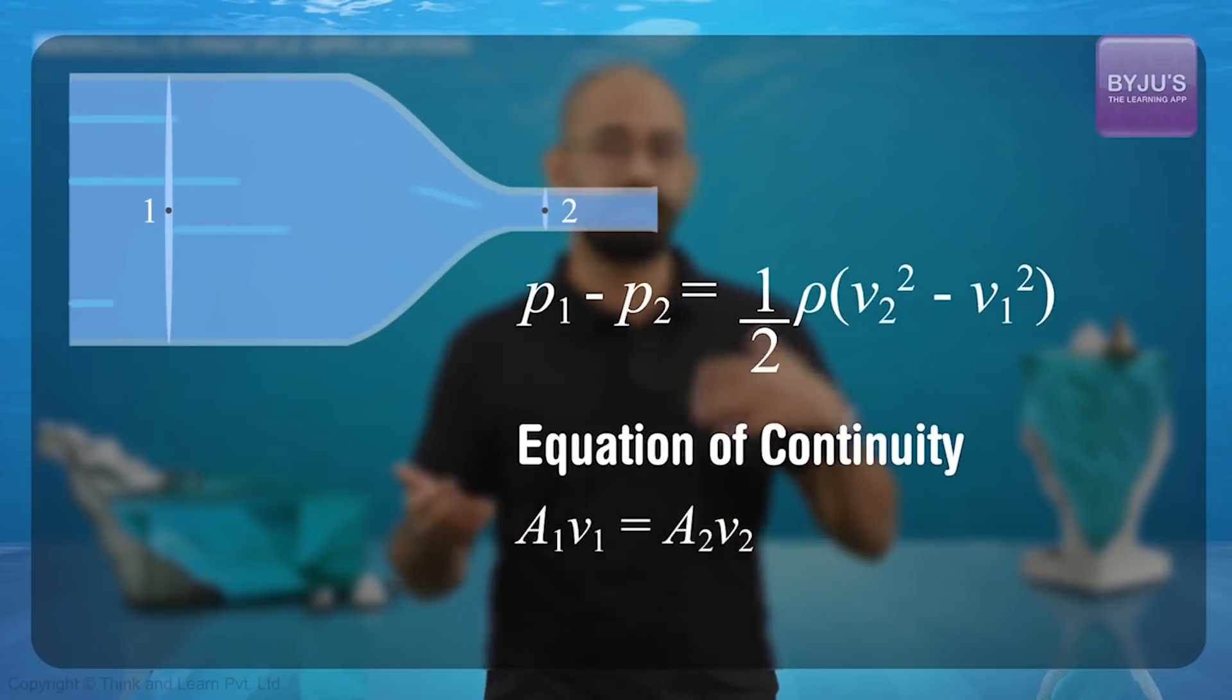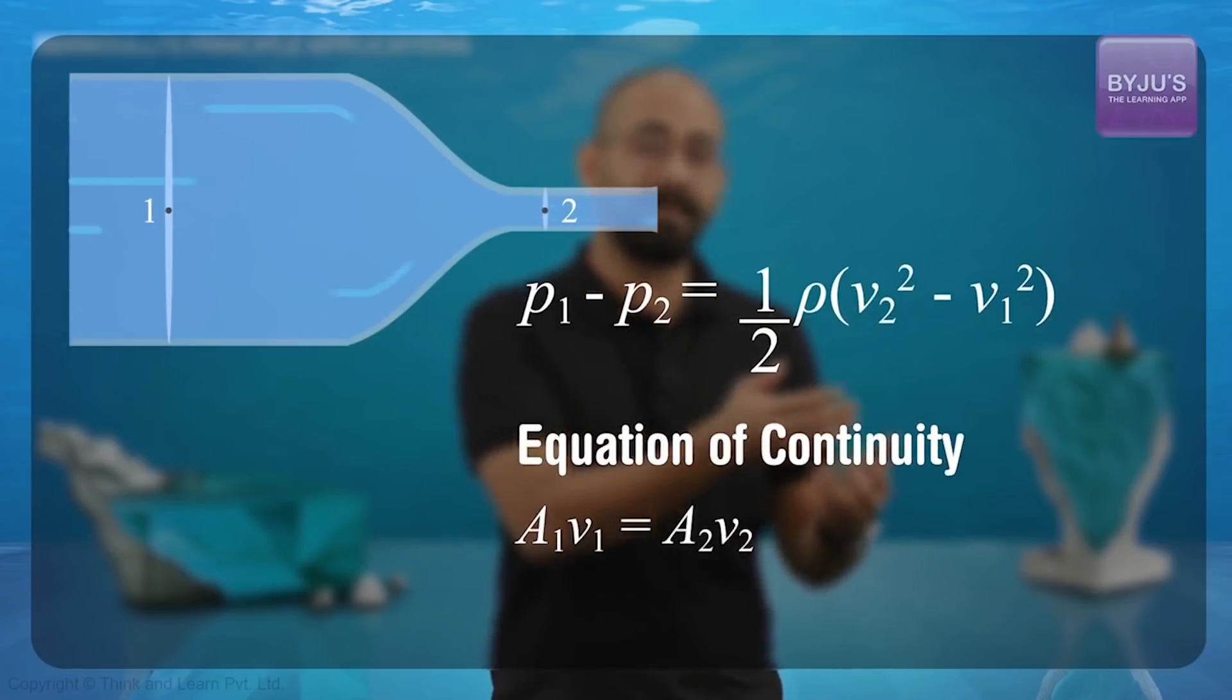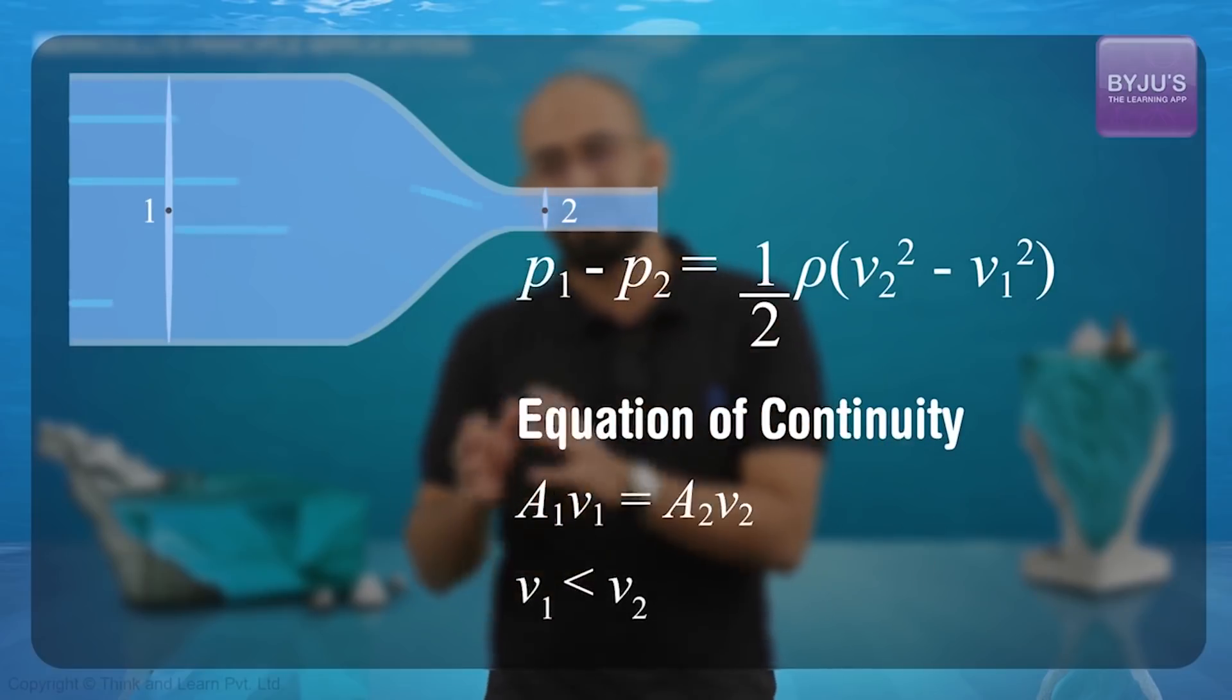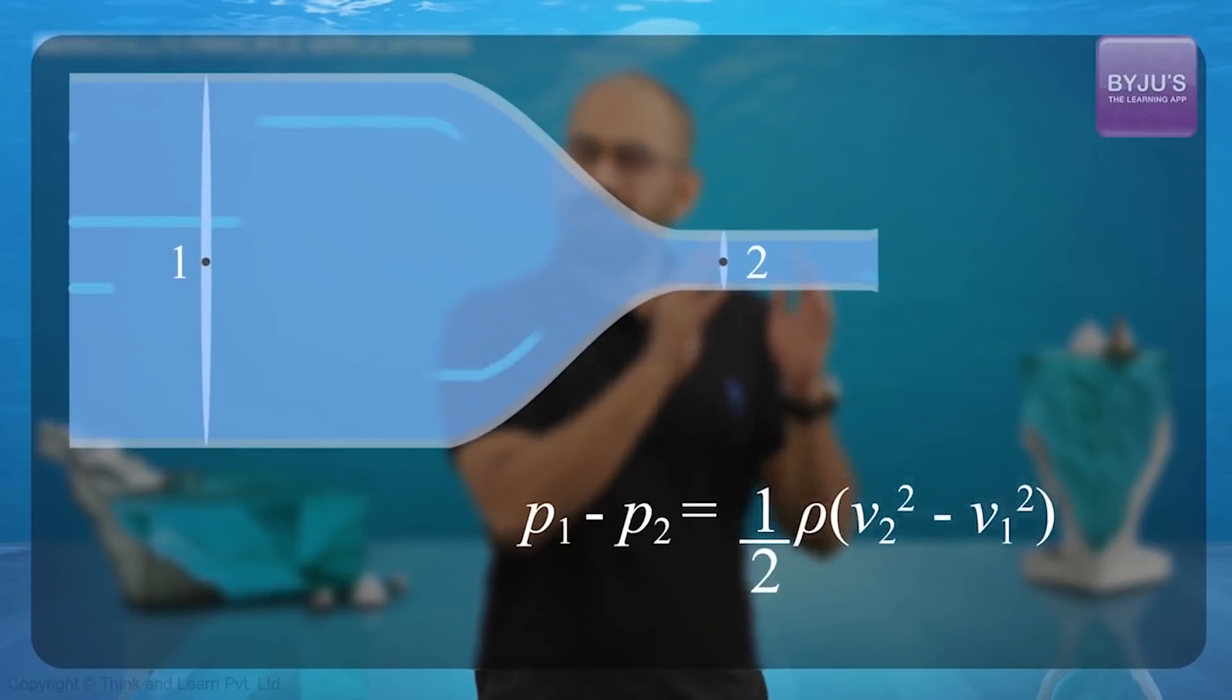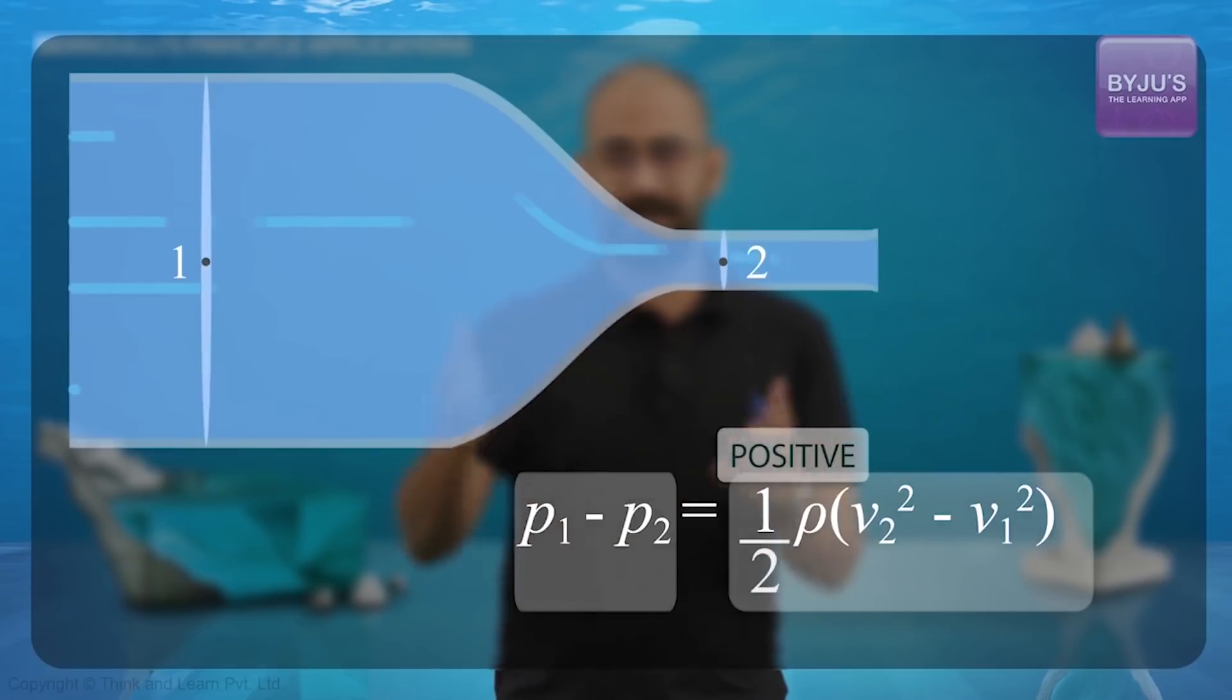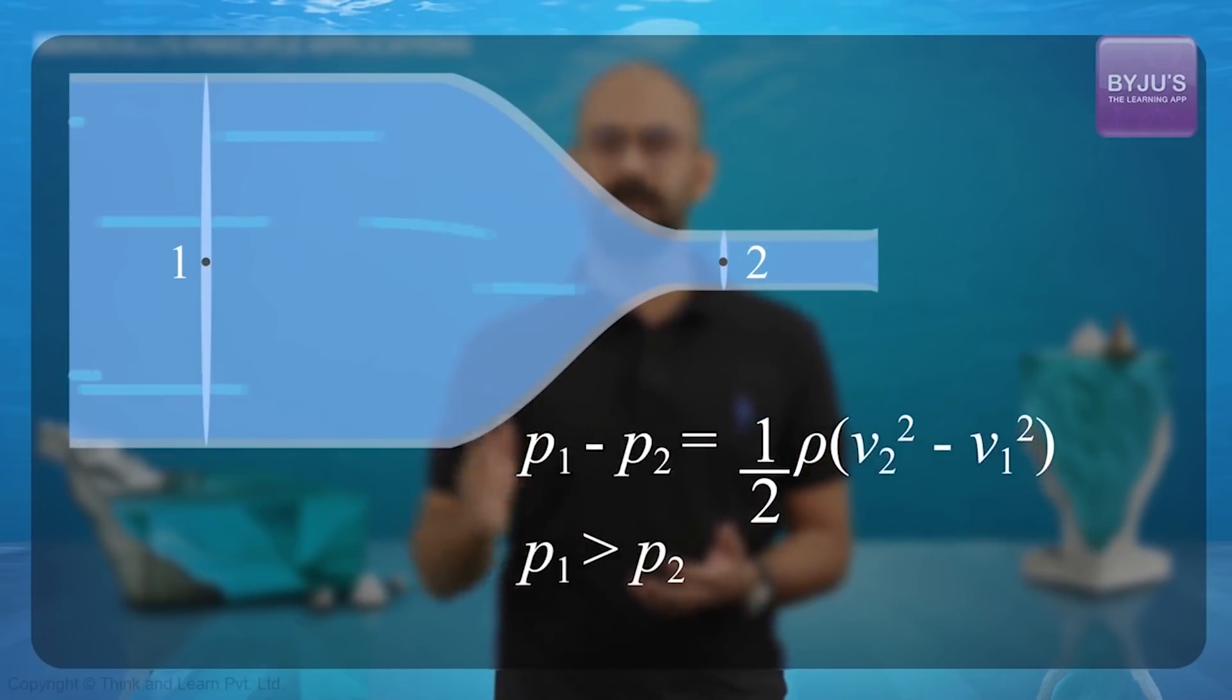Because a1 v1 should be equal to a2 v2. Lesser area means greater speed. So that means v2 will be greater than v1. So the term on the right hand side will always be positive, which again means that P1 minus P2 will be positive or in other words, P1 will always be greater than P2.